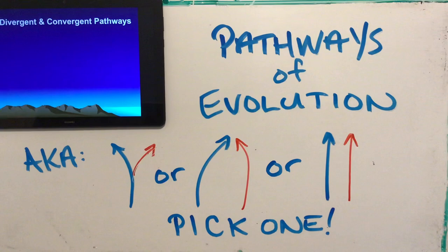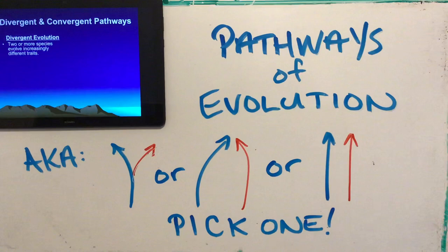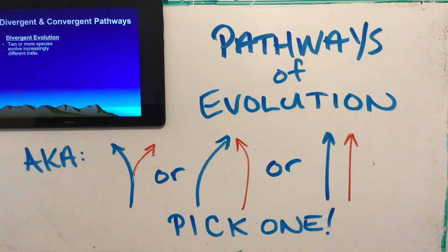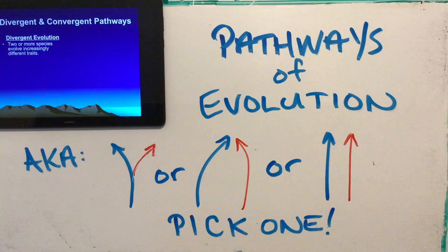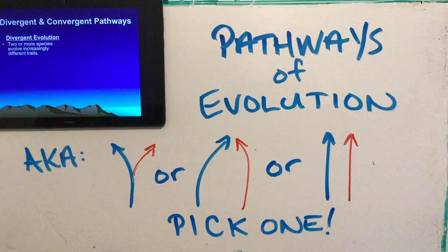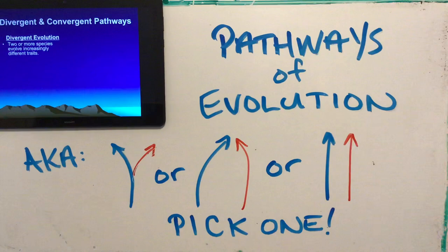A divergent evolutionary pathway is where two or more species evolve and become increasingly different with respect to their traits and appearance. They may still live in the same larger geographic area, but they specialize in different areas of that environment, taking on different ecological niches. Mother nature's checklist for one area is different than for the other, so you evolve different traits to survive.